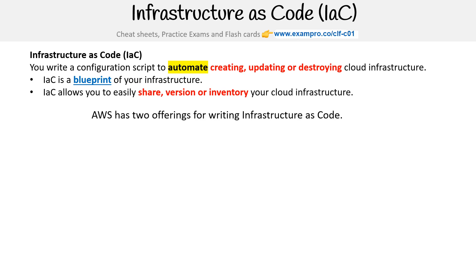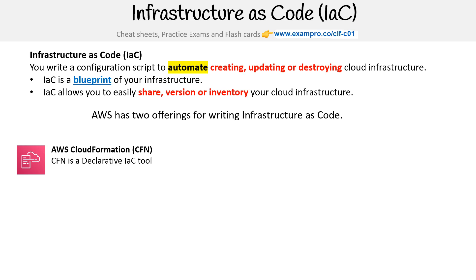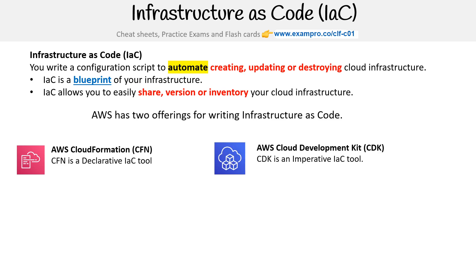AWS has two different offerings for IAC. The first is CloudFormation, commonly abbreviated to CFN, and this is a declarative IAC tool. And then you have AWS Cloud Development Kit, commonly known as CDK, which is an imperative IAC tool.